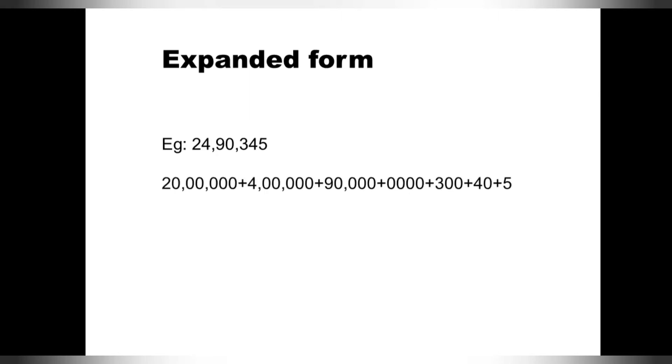The value of 2 is in the 10 lakhs place. So 2 times 10 lakhs will be 20 lakhs. And 4 — the value of 4 is in the lakhs place, so 4 times lakhs will be 4 lakhs. Then 9 is in the 10,000s place, so 9 times 10,000 will be 90,000. Zero is at the 1000s place — zeros will not have any value, so you can skip zeros.